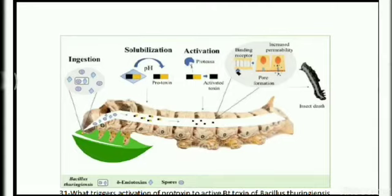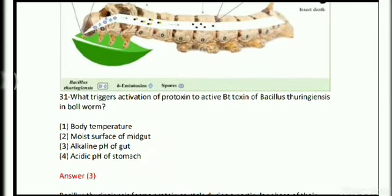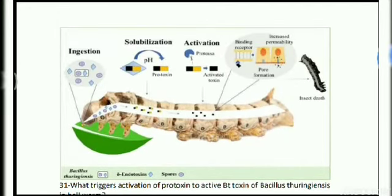Welcome everyone. We will discuss the questions from the zoology section. The first question is: what triggers the activation of prototoxin to active BT toxin of Bacillus thuringiensis in a bollworm? This question is from the application of recombinant DNA technology for insecticidal cases. Four options are given: body temperature, moist surface of midgut, alkaline pH of gut, and acidic pH of stomach.